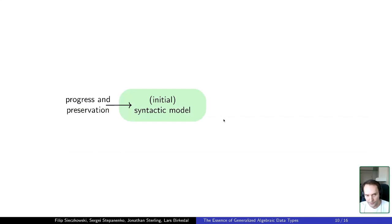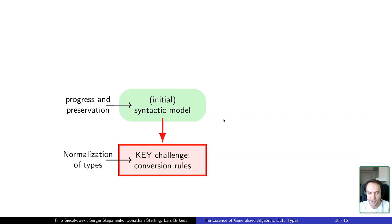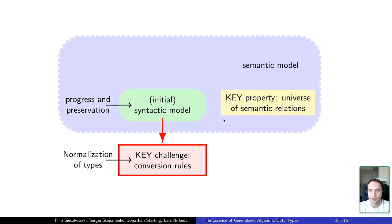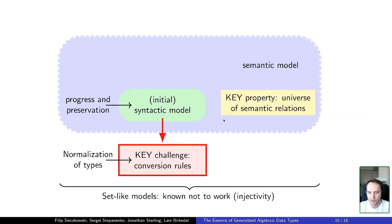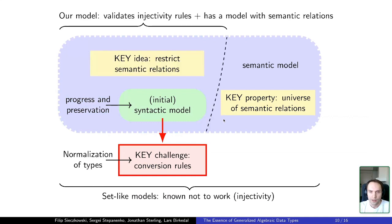So the way we proceeded, we constructed a syntactic model of progress and preservation, and to deal with conversion rules, we used normalization of types to simplify it a bit. And after that, when we tried to construct a semantic model, we noticed that it does not work due to the injectivity. So instead, what we tried to do is to make the universe of semantic relations smaller using some additional gadgets that we took from the machinery of types used for progress and preservation.